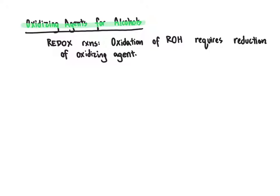Thinking back to general chemistry and what we know about oxidation and reduction reactions — so-called redox reactions — one thing you've likely heard before is that in redox reactions, during the oxidation of one molecule, another molecule is reduced. As one molecule gains electrons, another one is going to lose electrons during that process. The oxidation of an alcohol is going to necessitate that the oxidizing agent during that process gets reduced.